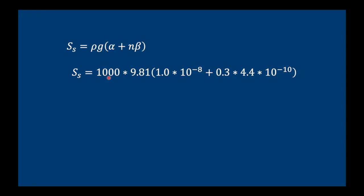And we plug it into our equation. This is the weight of water, 1000 kilograms per cubic meter, acceleration due to gravity, alpha 10 to the minus 8. The porosity, we've assumed it's 30%, or 0.3. And here's our beta term, which is constant.